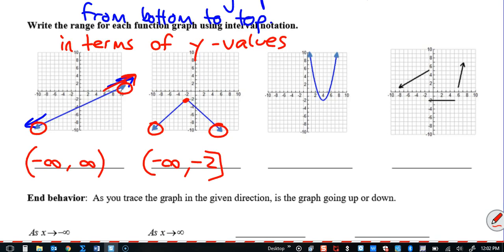How about the next one? You may remember this as a quadratic, a graph of a quadratic function. The lowest point on the graph is negative two. Again, the lowest y value is negative two. It includes negative two, so I use a bracket. Arrows at the top indicate it's going on forever, so it's going towards positive infinity.